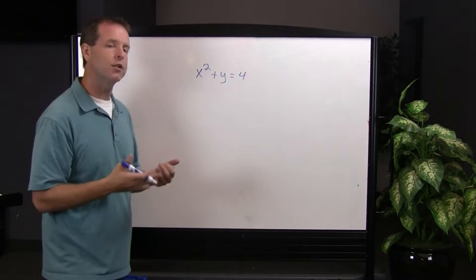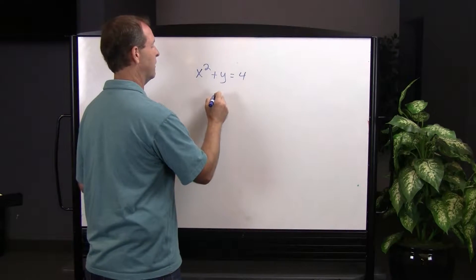So in this case, let's solve this equation for y. I'll subtract x squared from both sides.